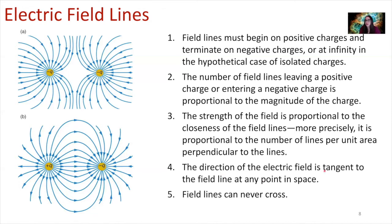Rule four: the direction of the electric field is tangent to the field line at any point in space — wherever you draw one of these field lines, the electric field lies right along that line at that point. Rule five: electric field lines can never cross. You cannot cross paths — just like in Ghostbusters, you can't cross your electric field lines in your drawings.